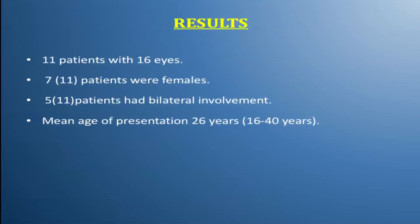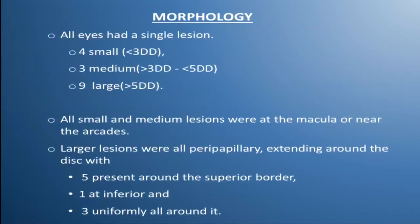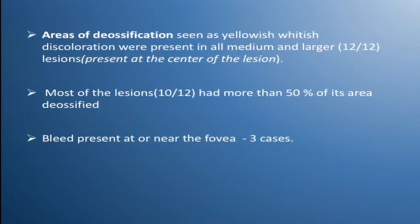There were 11 patients with 16 eyes; 7 were females, and 5 patients had bilateral involvement. Mean age was 26 years. Four eyes had small lesions, 3 were medium, and 9 large. All small and medium lesions were macular, and large lesions were all peripapillary in location. Areas of deossification seen as yellowish-whitish discoloration were present in all medium and large lesions, and most had more than 50% of their area deossified.